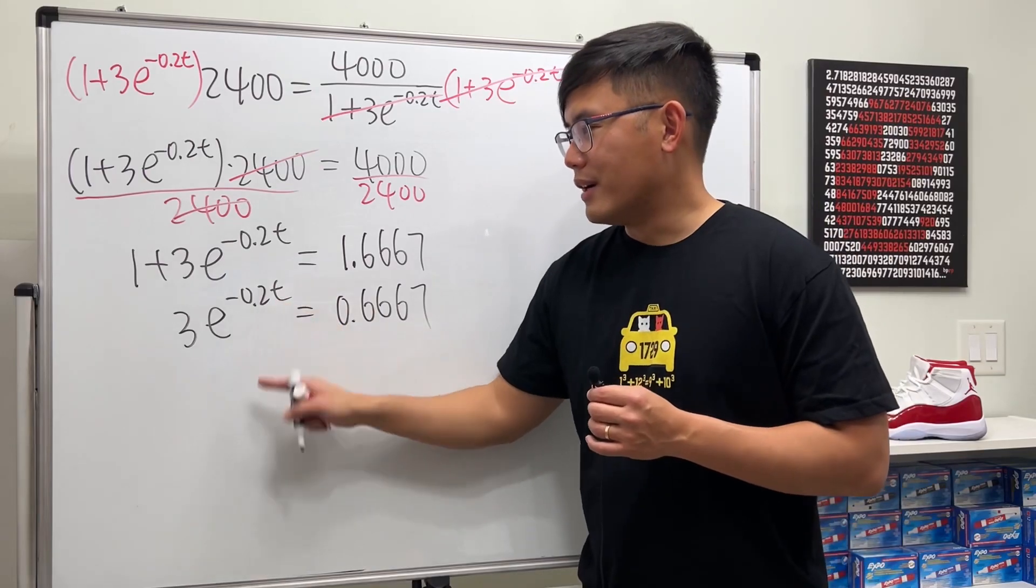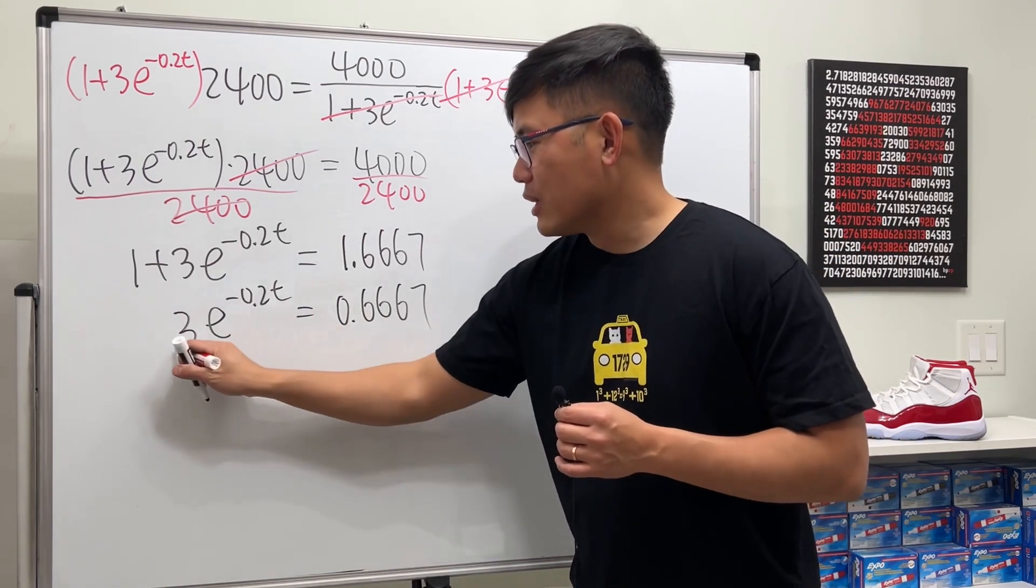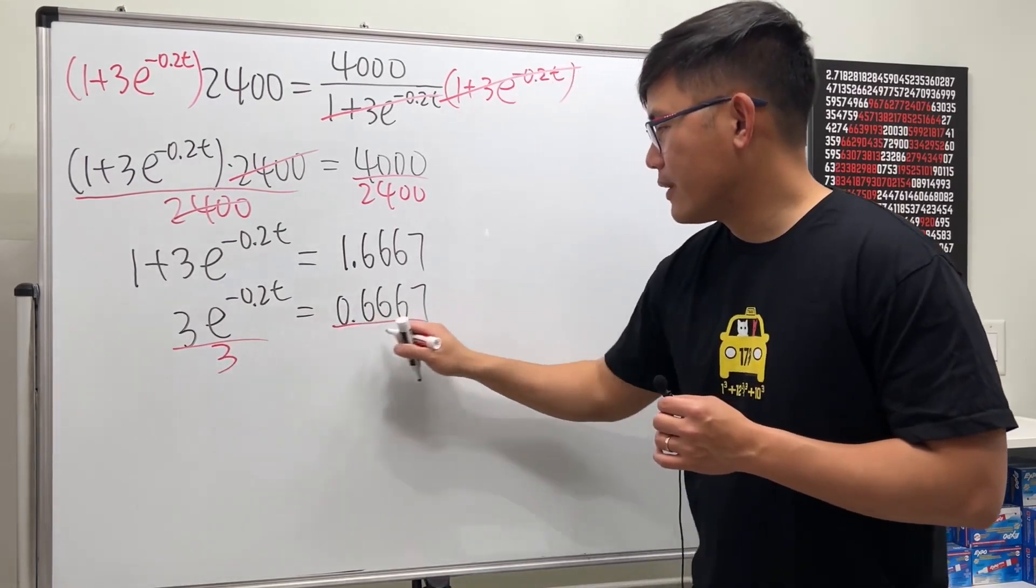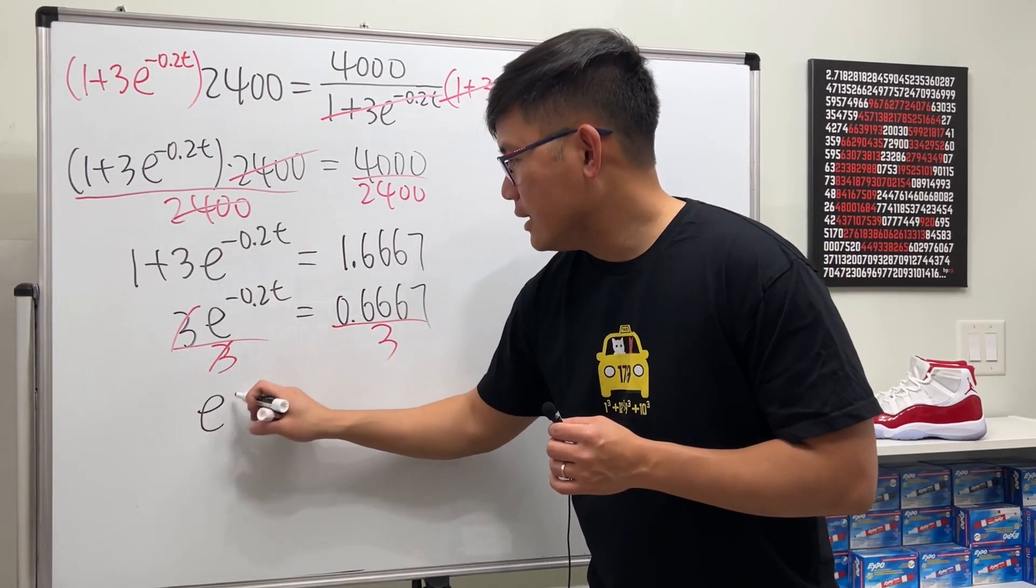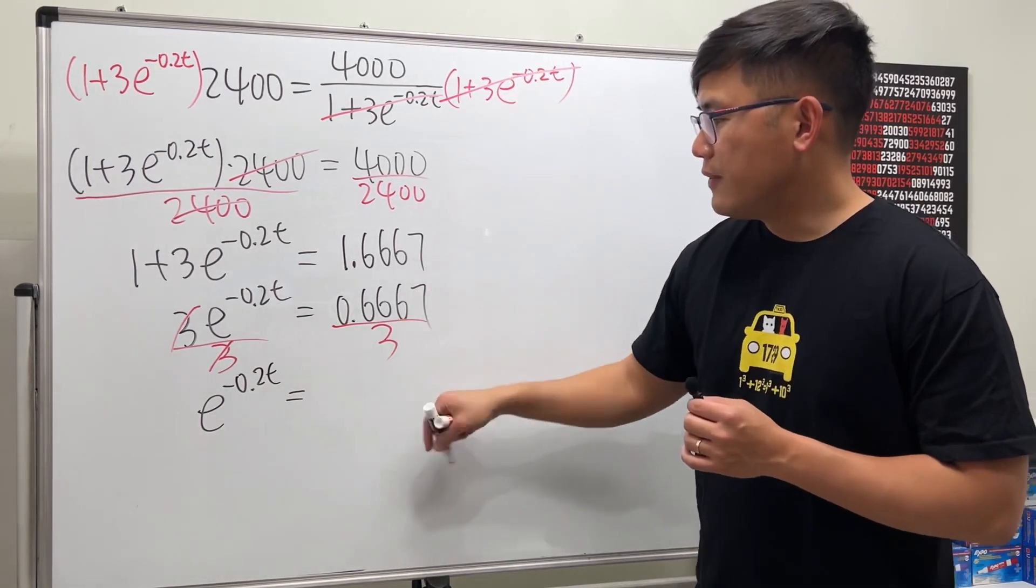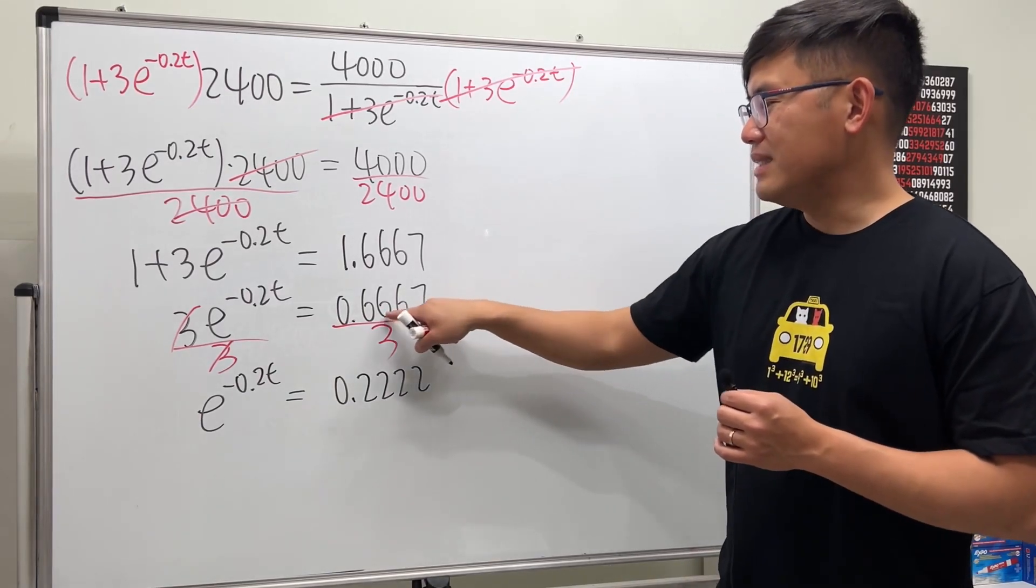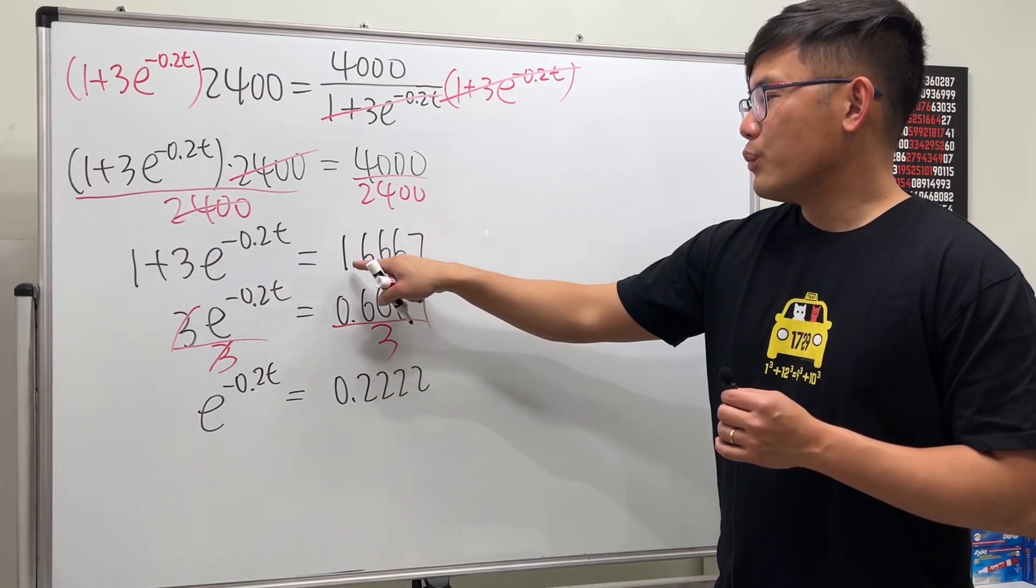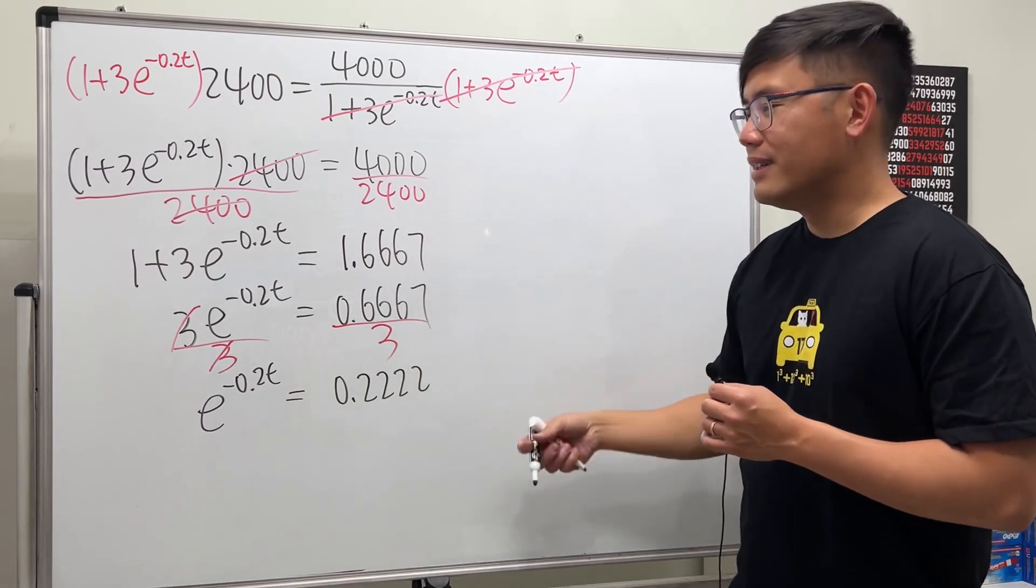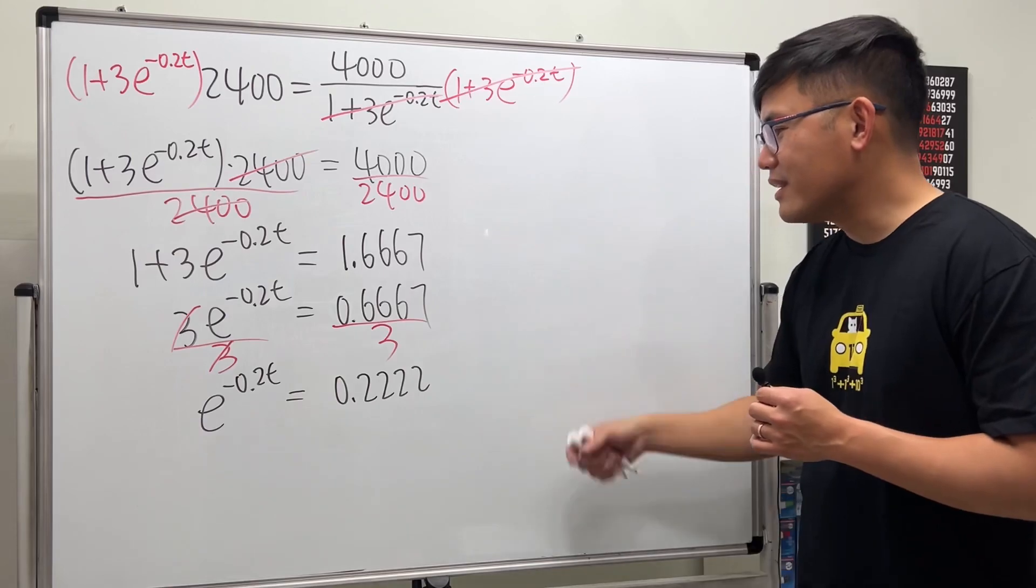Now t is right here, so we have to get rid of this 3. This is 3 times that, so we divide both sides by 3. That cancels, and we get e to the negative 0.2t equals 0.2222, because it was technically 1.66666 forever, and after you subtract 1 it's 0.666 forever, and if you divide by 3 you get 0.2222.